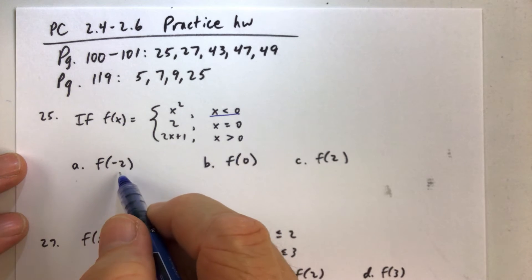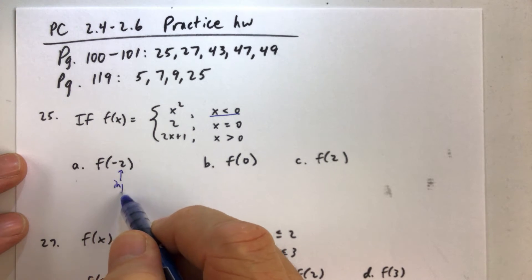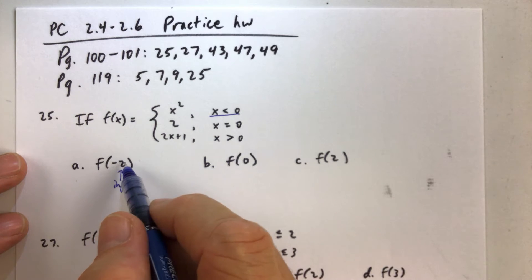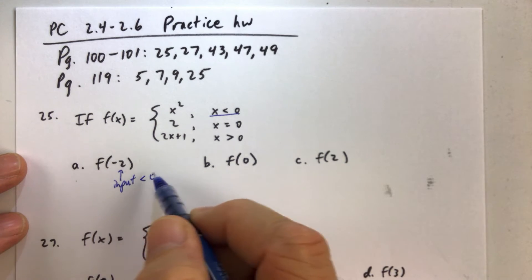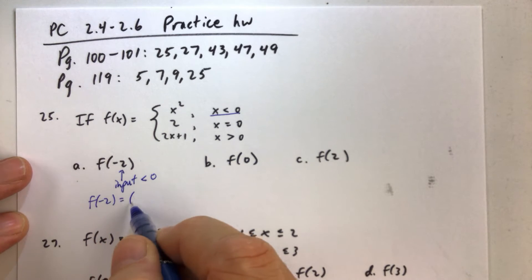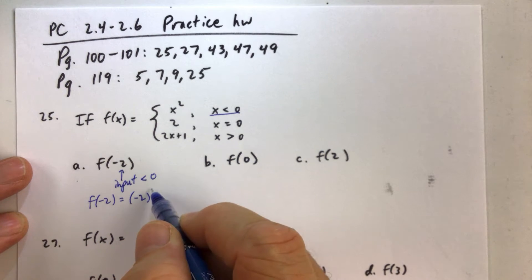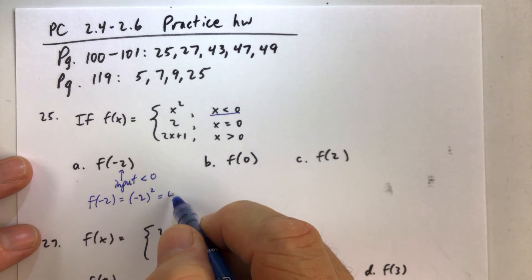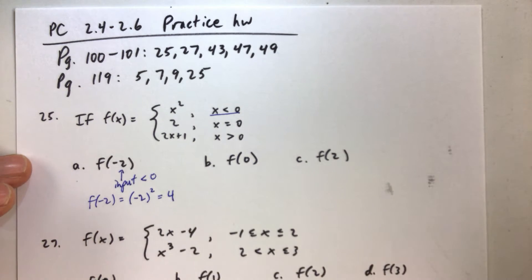And this is an input. The numbers on the inside of the parentheses are the inputs. So when the input is less than 0, we would use the first piece. So we would replace x with negative 2. And when we square negative 2, we get 4. And that's it. That's how you do that problem.